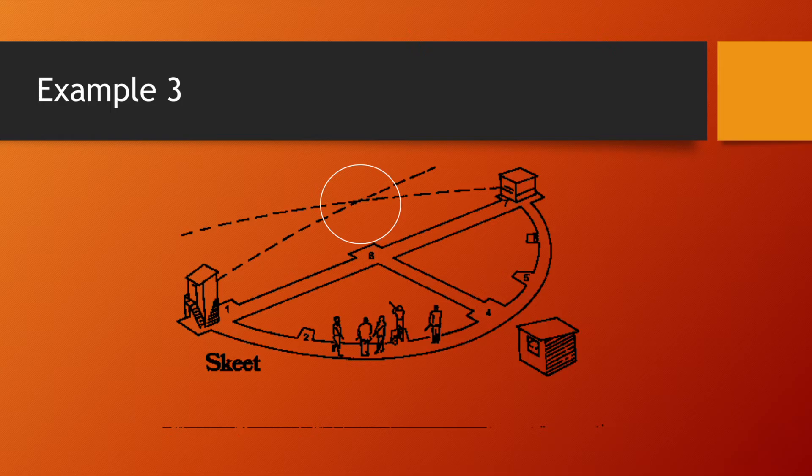Now, for example three, we have here a different kind of layout for this skeet range. As you can see here, the shooter is at an almost perfect position to the two towers and where the towers will be projecting the clay into the air.